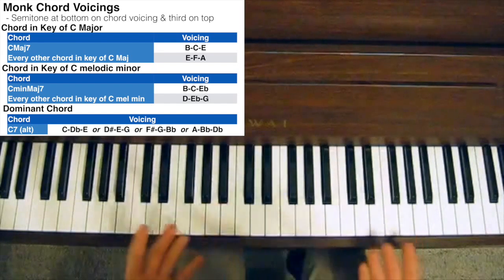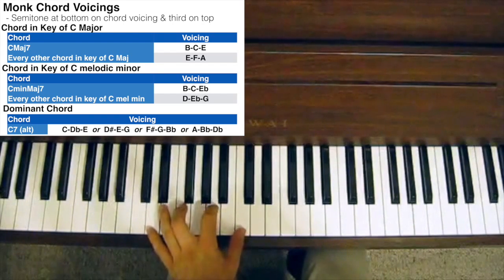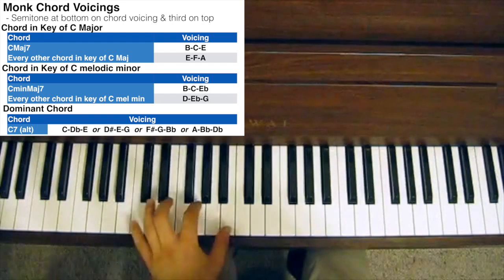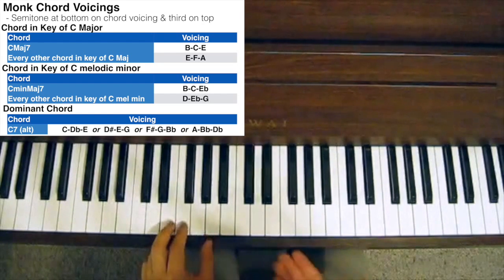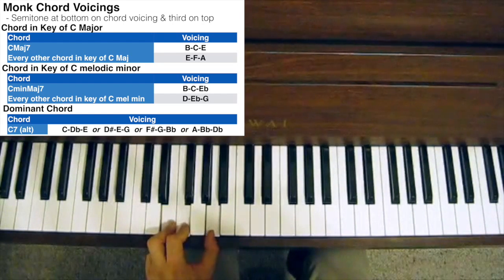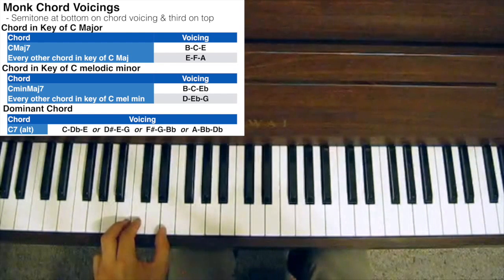If we take a 2-5-1 progression in the key of C major, we'd go D minor 7 to G7 to C major 7. He'd play something like D minor 7, G7 to C major 7.